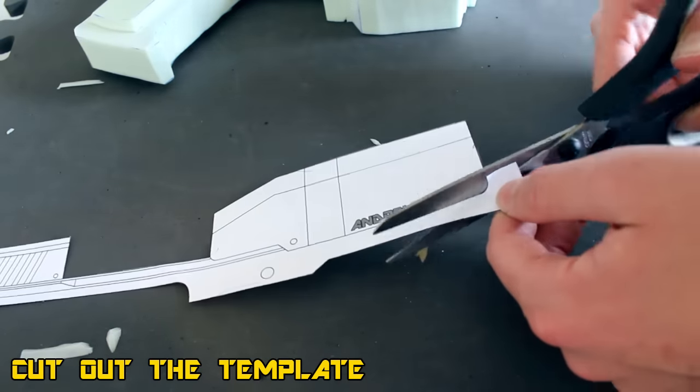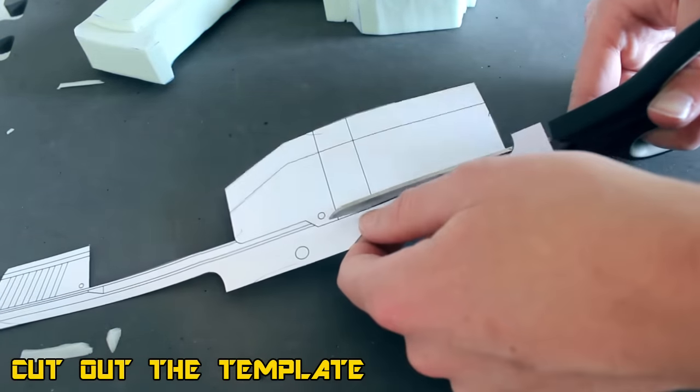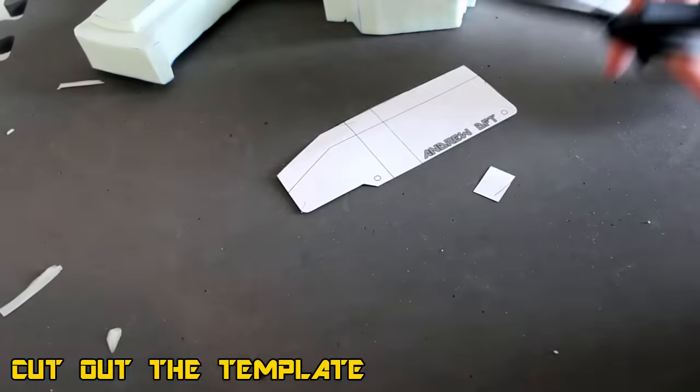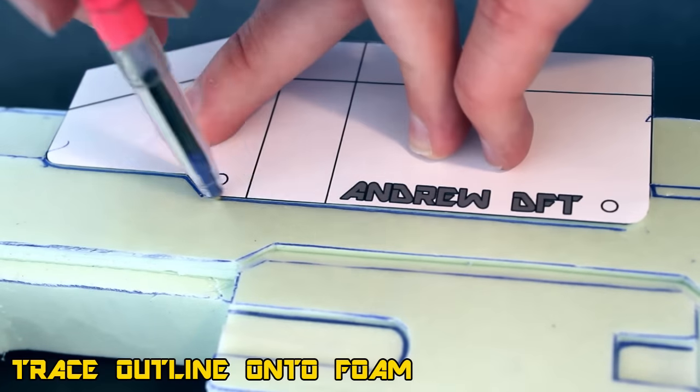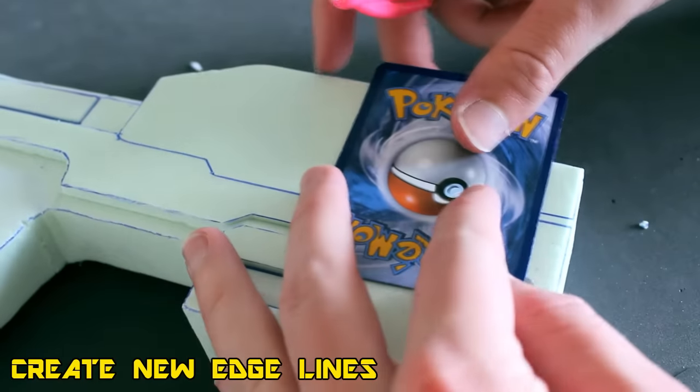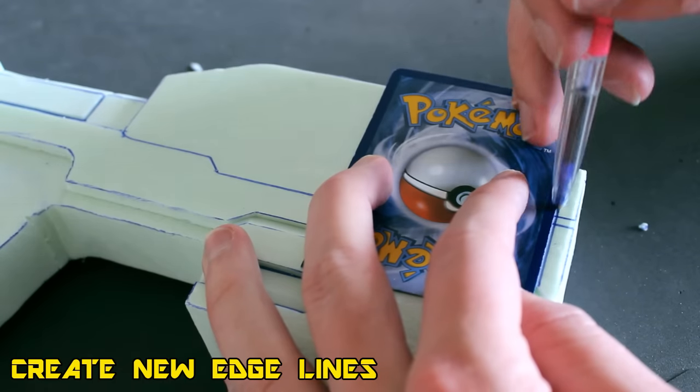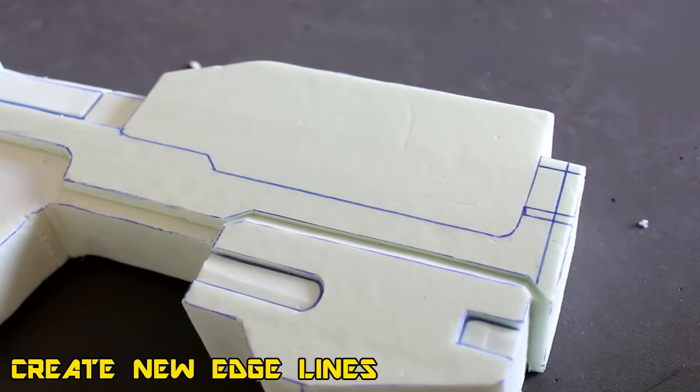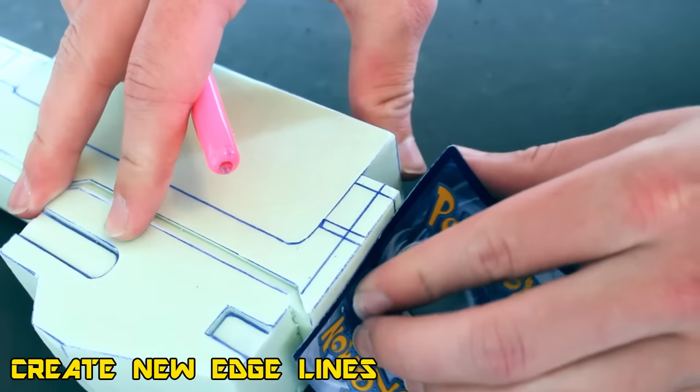Now we can start working on the top section of the prop. Grab your template and carefully start cutting out the design, and then we can use that to trace the area onto our block of foam so we know exactly where it's going to be. Using a ruler, just create these edge lines on the front of the prop. This is going to be where the muzzle of the gun is.